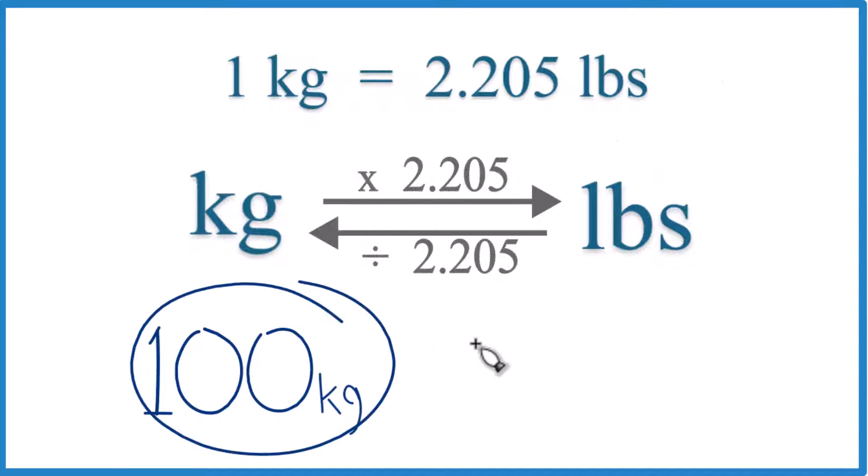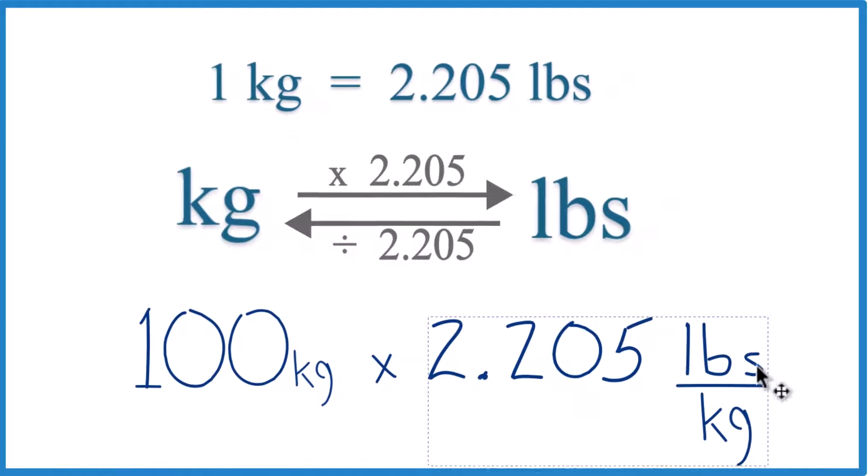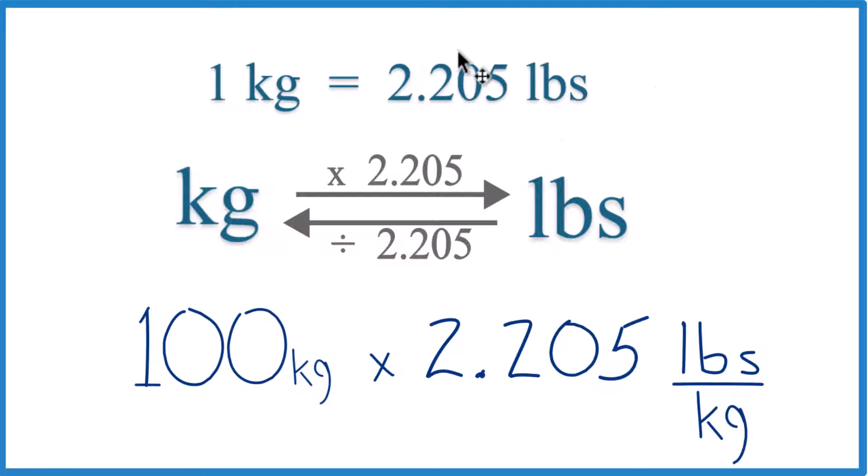So we have 100 kilograms here. We're going to multiply by that 2.205 number, the conversion factor. And you'll note that it's 2.205 pounds per kilogram. That comes directly from our conversion factor here.